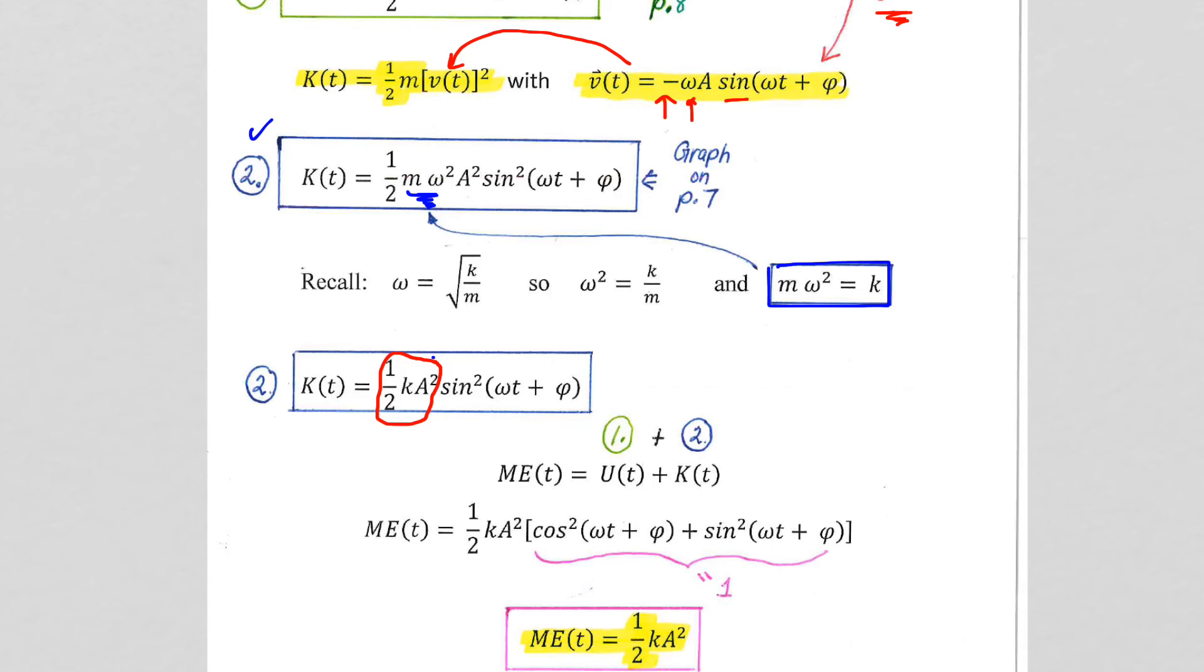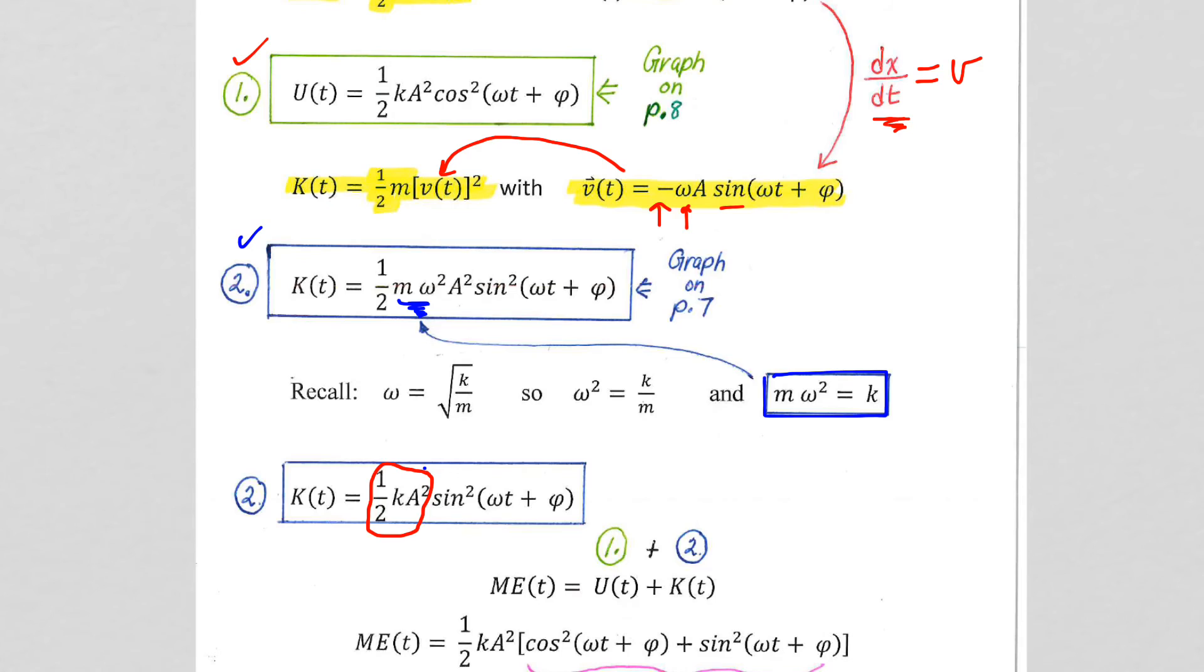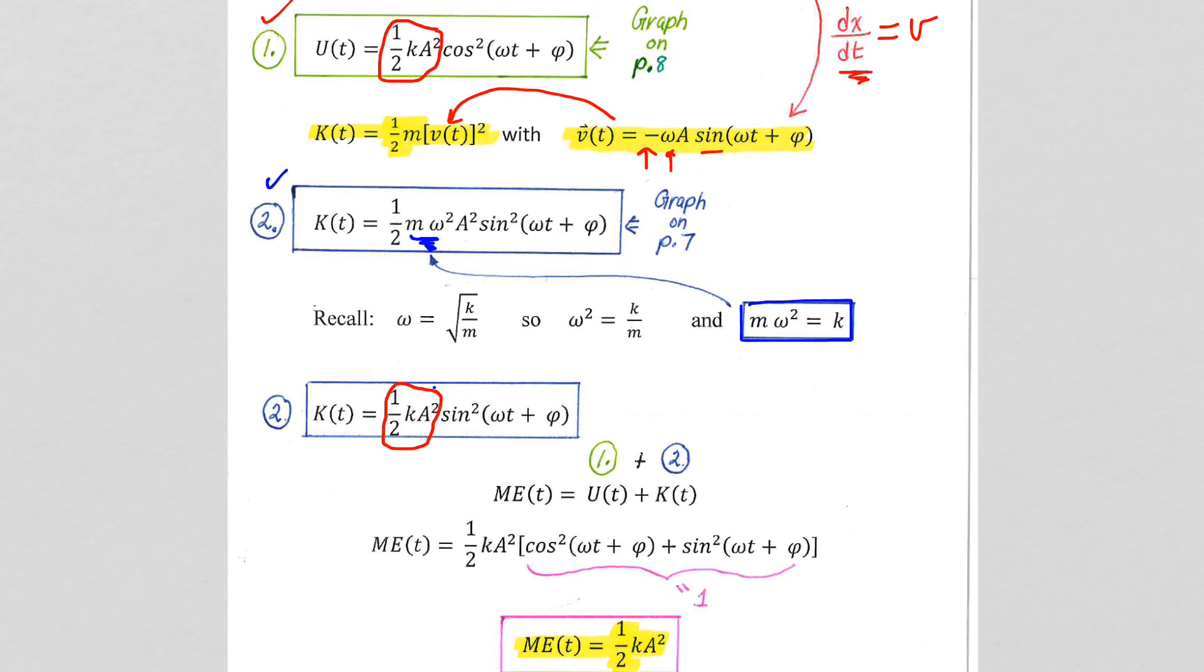So, we have a kinetic energy value of one-half k a squared sine squared omega t. We have a potential energy value, one-half k a squared, there it is again. Cosine squared.